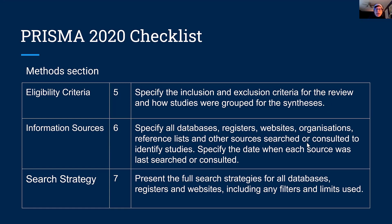You need to specify those inclusion and exclusion criteria developed during the protocol. Then you need to figure out which databases, registers, and websites you're going to get information from. As you're doing the searches, or working with a librarian to do the searches, you need to specify the date when each source was searched. This allows later researchers — or you when running an update — to start from that specific date and only look at things published since then, without reinventing the wheel. The search strategy is where you'll want to work with the librarian to get full search strategies for all databases, because more and more journals now require you to provide full search strategies for all databases searched.